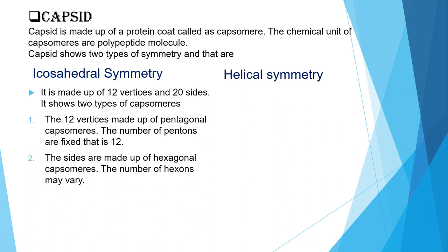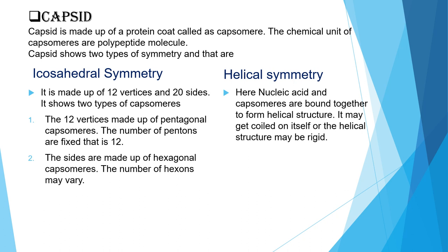The sides are made up of hexagonal capsomers called hexons, and the number of hexons may vary. In helical structure, nucleic acid and capsomers are bound together to form a helical structure — they get coiled to each other and may coil on itself, or the helical structure may be rigid and show a rod shape. Some viruses may show complex symmetry.